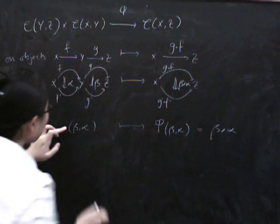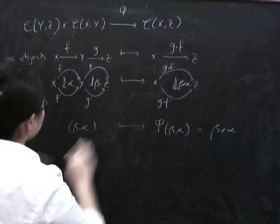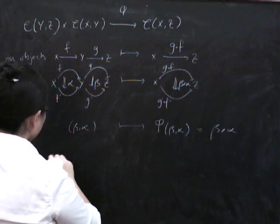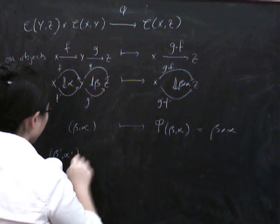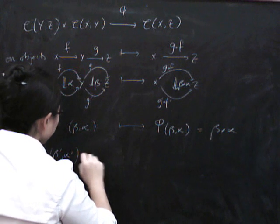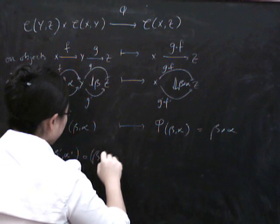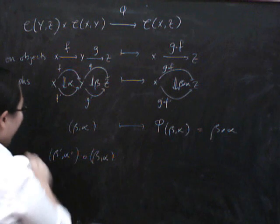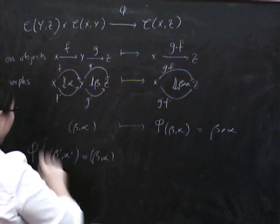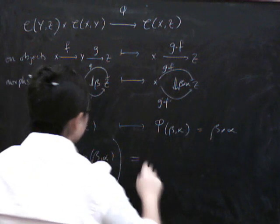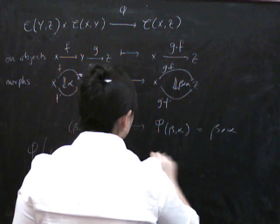To see what functoriality is, we have to take a pair of composable morphisms in here. Say we might have (beta prime, alpha prime), which we can compose with (beta, alpha).